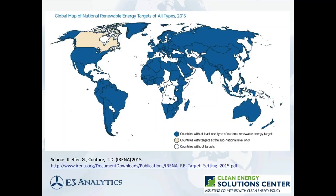This map comes from a recent report I helped co-author with staff at IRENA that provided the first global overview of renewable energy targets. It shows the global map of targets as of mid-2015. The spread is quite wide — over 160 countries have some form of target, and the number continues to grow.